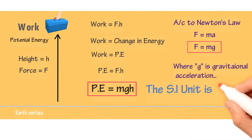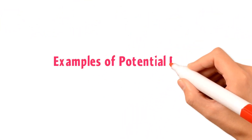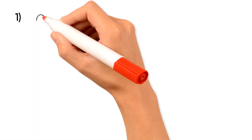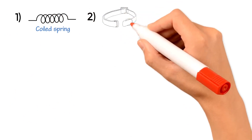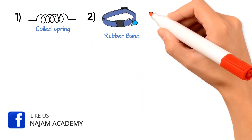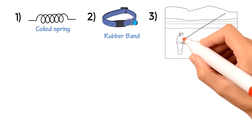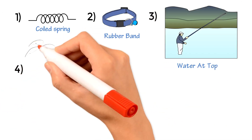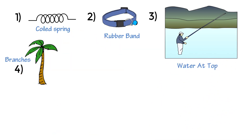The SI unit of Potential Energy is Joule. Now let me give you some other examples of Potential Energy. Number one, a coiled spring has Potential Energy. Number two, a stretched rubber band has Potential Energy. Number three, river water at the top of a waterfall possesses Potential Energy.